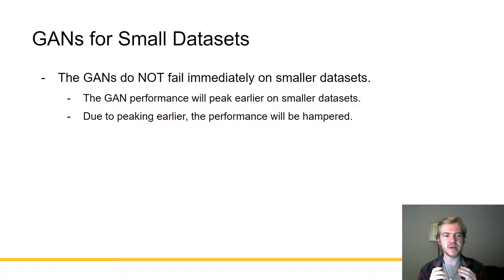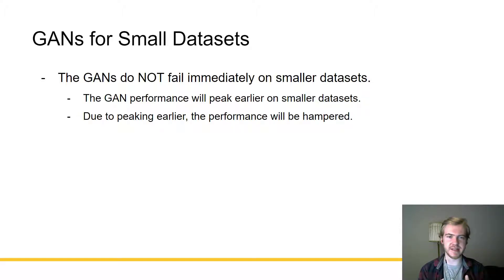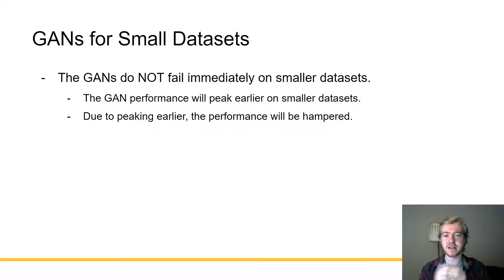Let's talk about GANs for small data sets. These GANs do not fail immediately on smaller data sets. The GAN's performance will peak earlier on in training with small data sets, and due to peaking earlier, their performance will then be hampered.